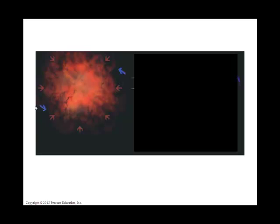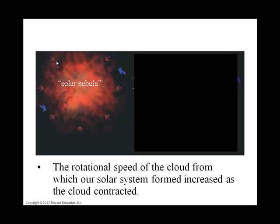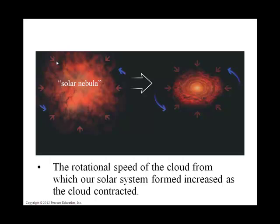It's very similar to a skater who has their arms extended — as they bring in their arms, their rotation increases. So from left to right, what we're seeing is the cloud contracting. The red arrows show it contracting, and the blue arrows show the solar nebula spinning even faster. Just as an ice skater brings in her arms and moves faster, our solar nebula contracted and rotated more quickly.